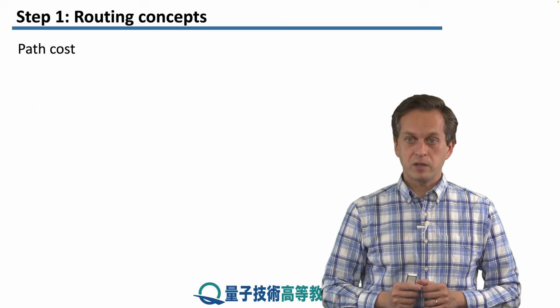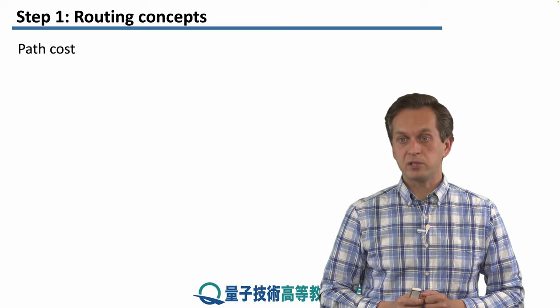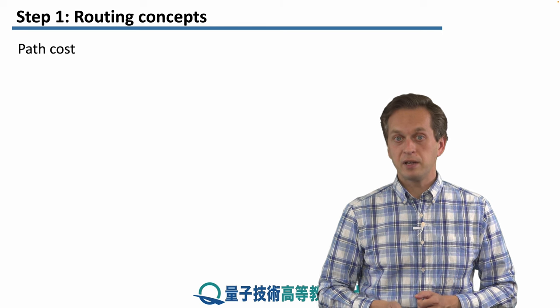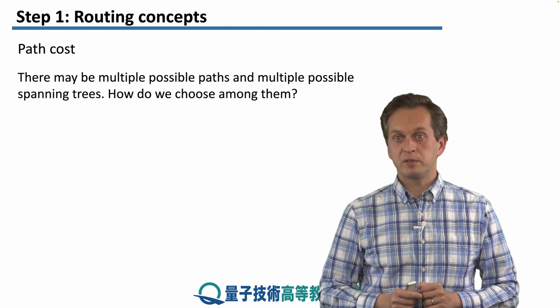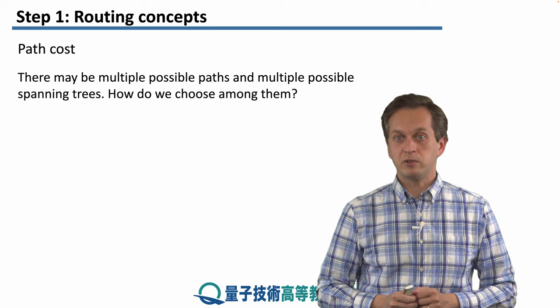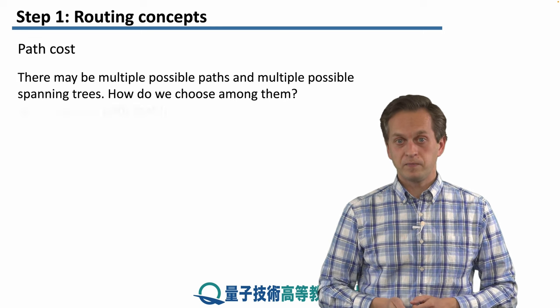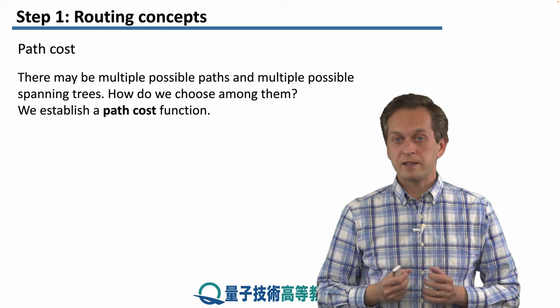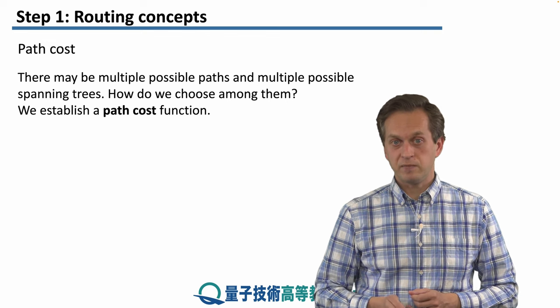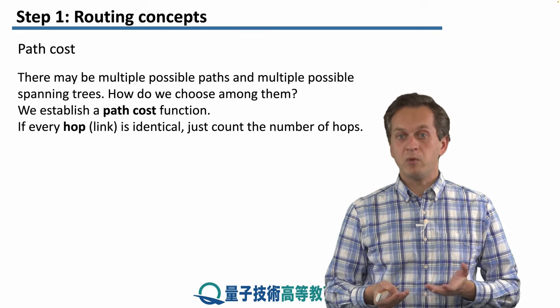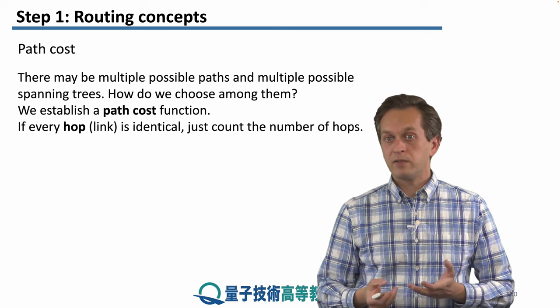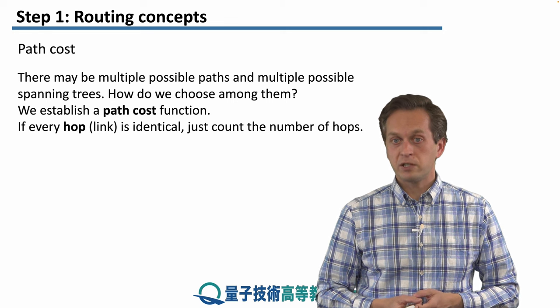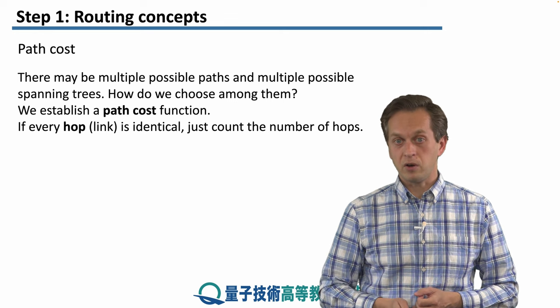Another important concept, which goes back to how to pick a possible path as our routing path, is the path cost. There may be multiple possible paths and multiple possible spanning trees. So how do we pick one? Well, we must establish some path cost function. For example, if every hop has identical weight or identical cost, then this path cost function is just the sum of the hops.